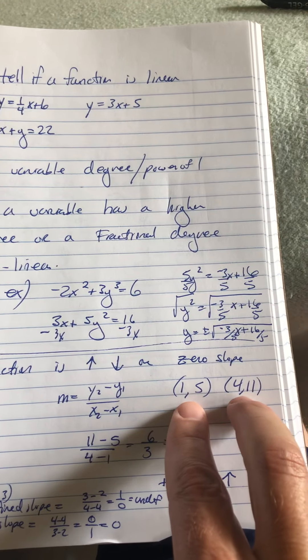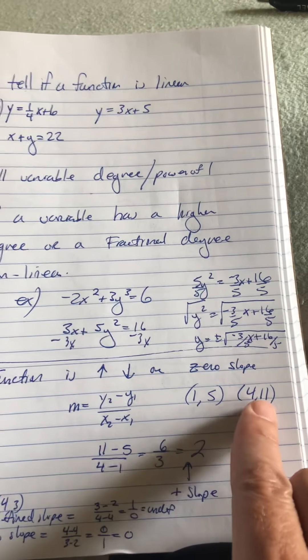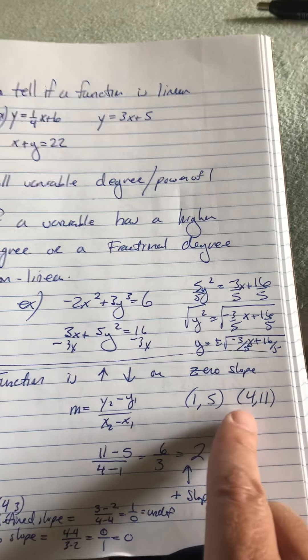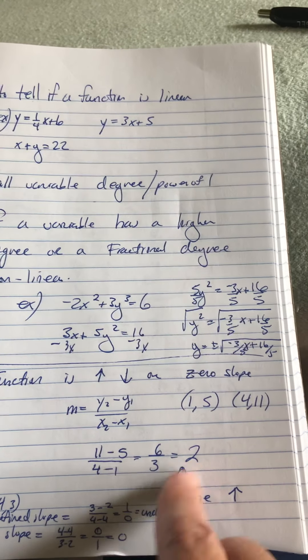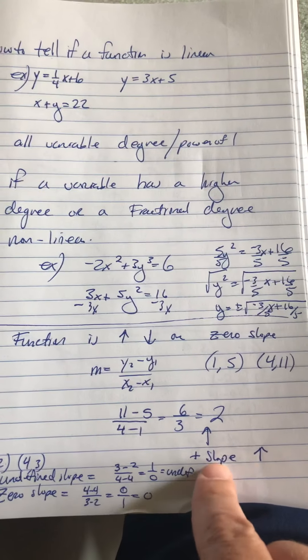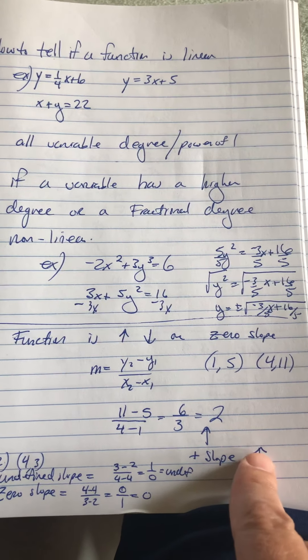So, if we had two points, 1, 5, and 4, 11, and we went y2 minus y1 over x2 minus x1, we'd get 6 over 3, which is 2. Well, that's a positive slope, so the function is increasing.